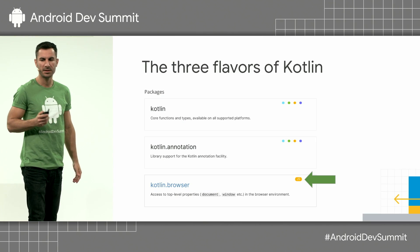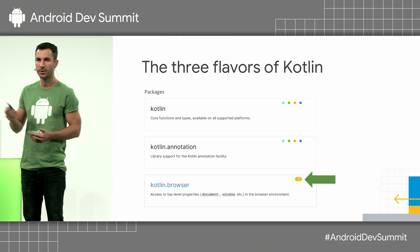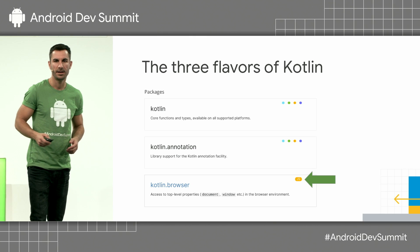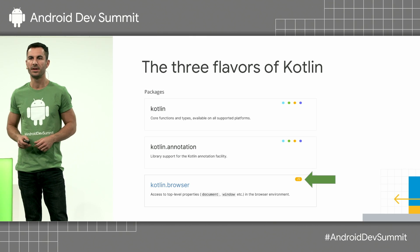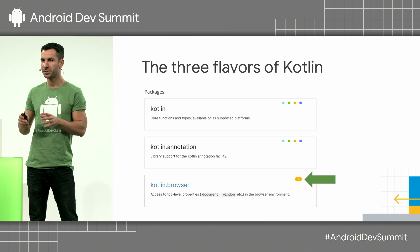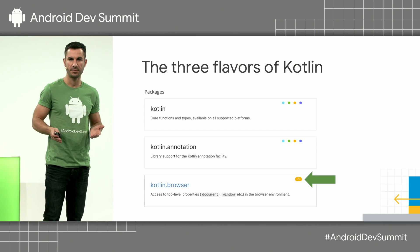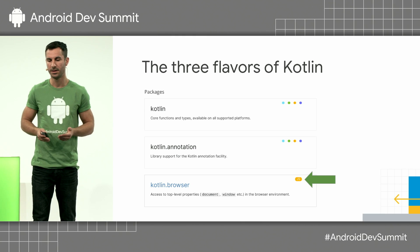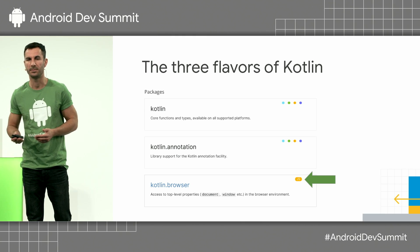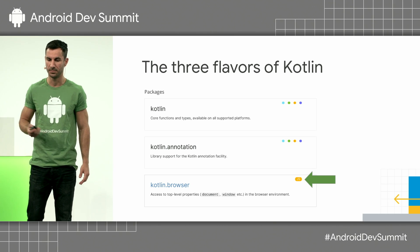Now, what do I mean by platform-specific Kotlin? If you go and browse the documentation, the reference pages for each of the Kotlin packages, and you mouse over any of them, in the top right you will see these multicolored chips that tell you which compilation target this library is available on. For example, the Kotlin browser package that lets you access interfaces for document and window from the web browser environment probably only makes sense on a JS target, and that's how it is.